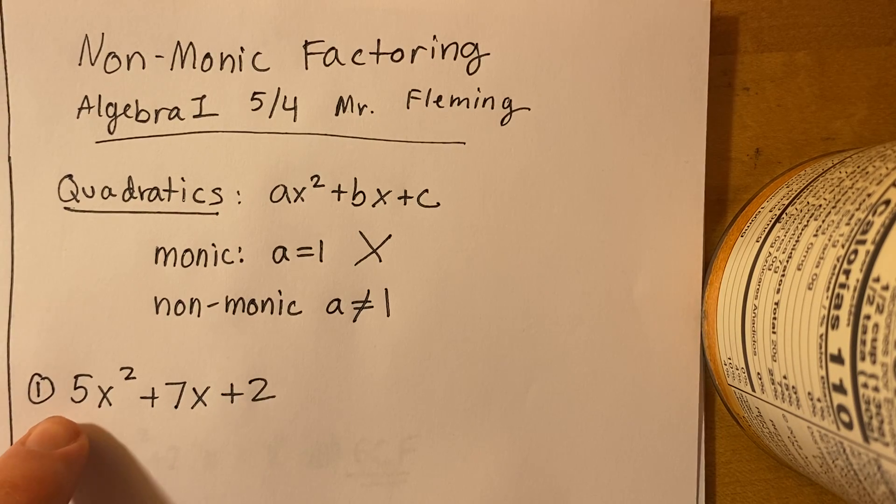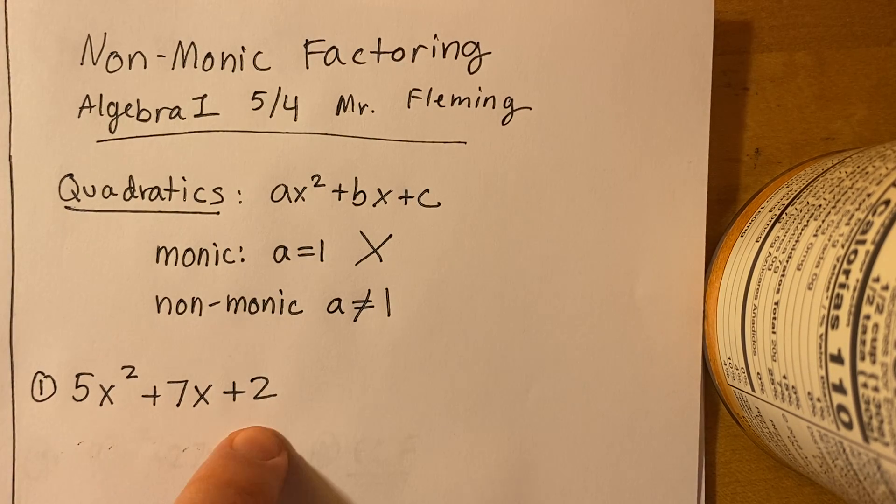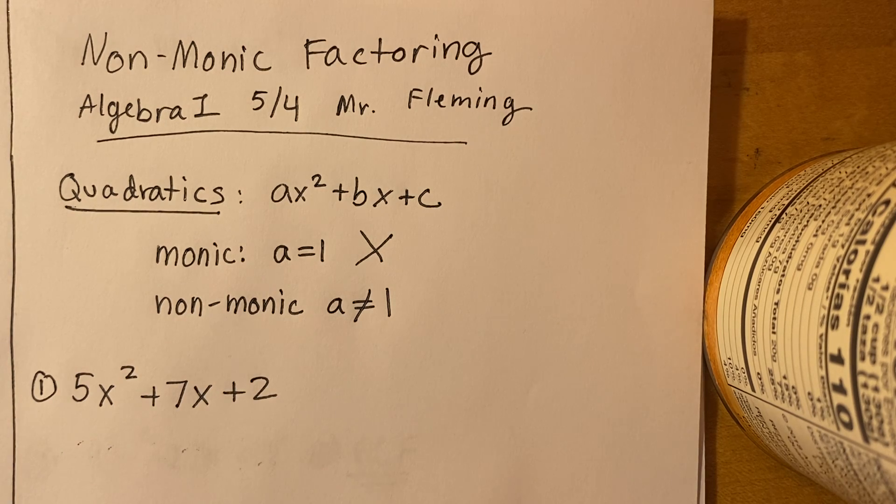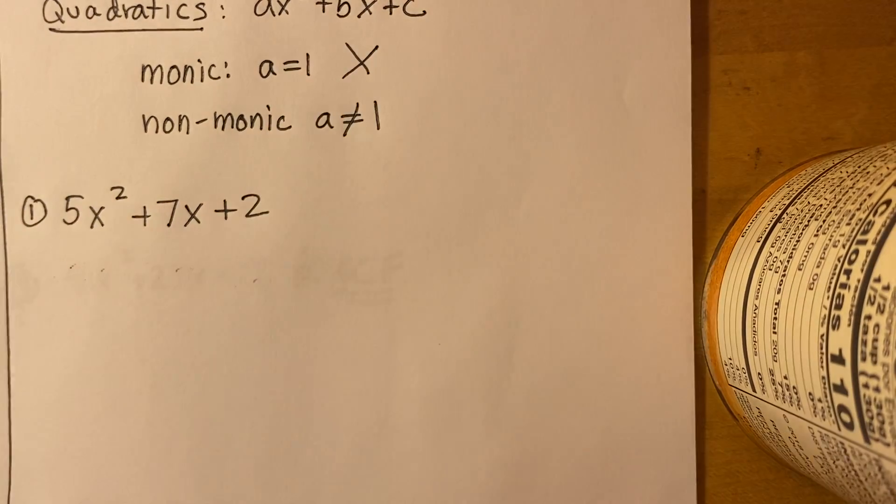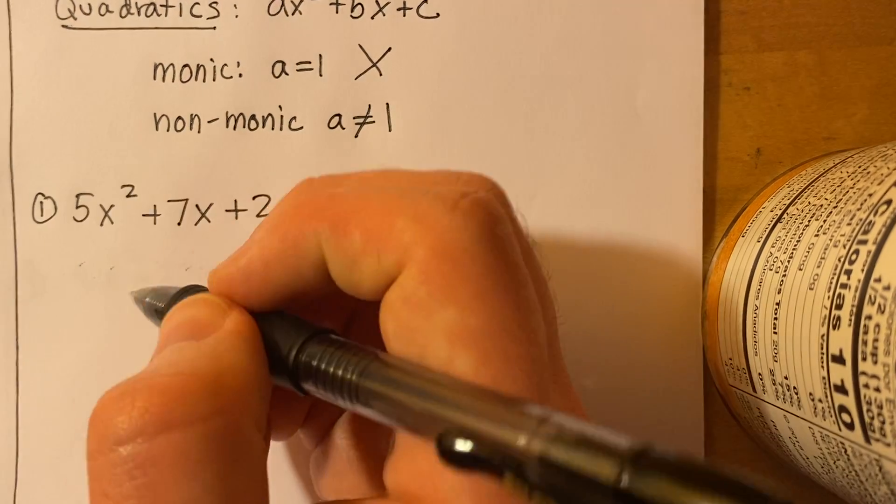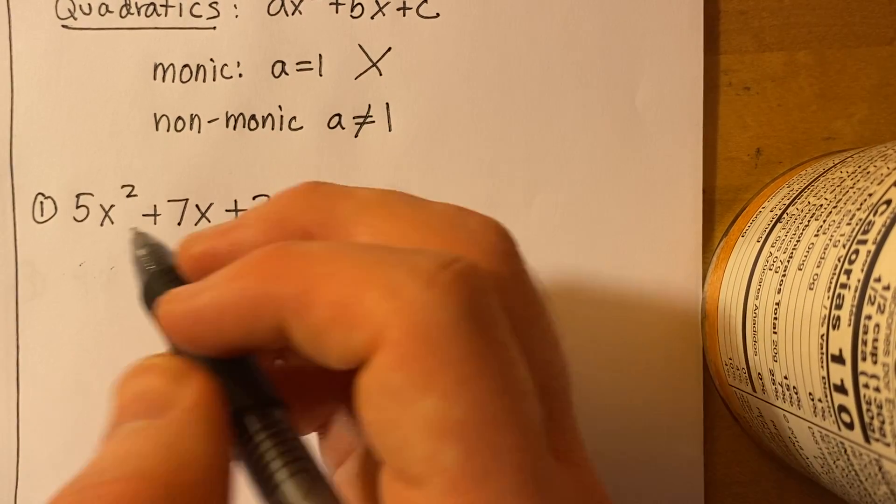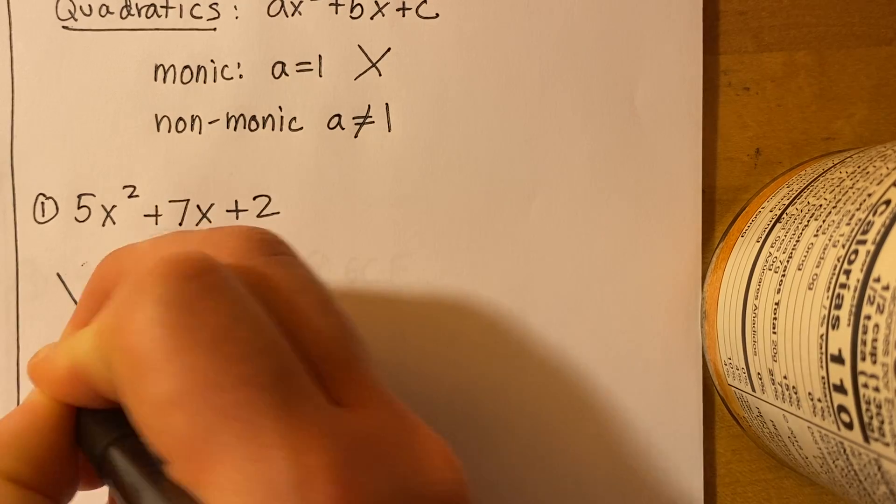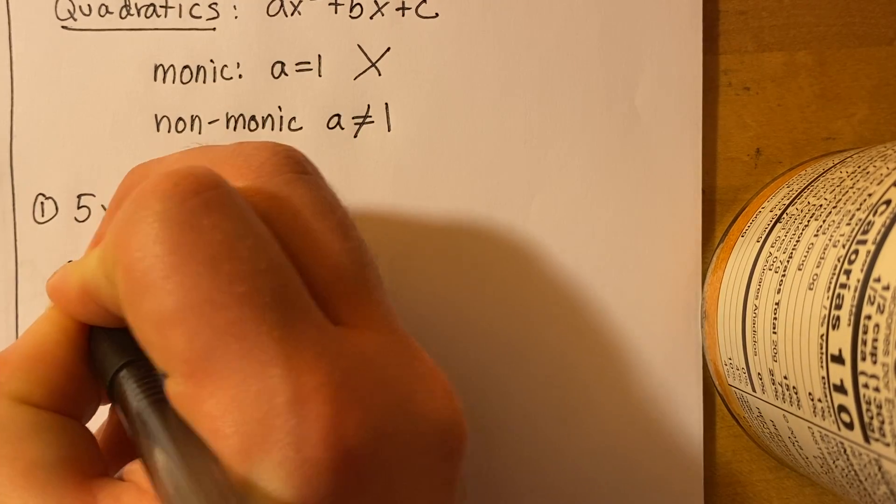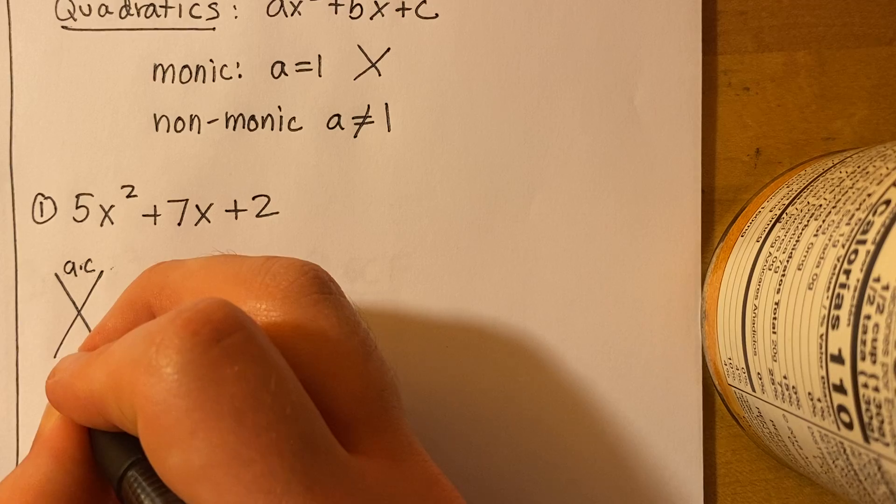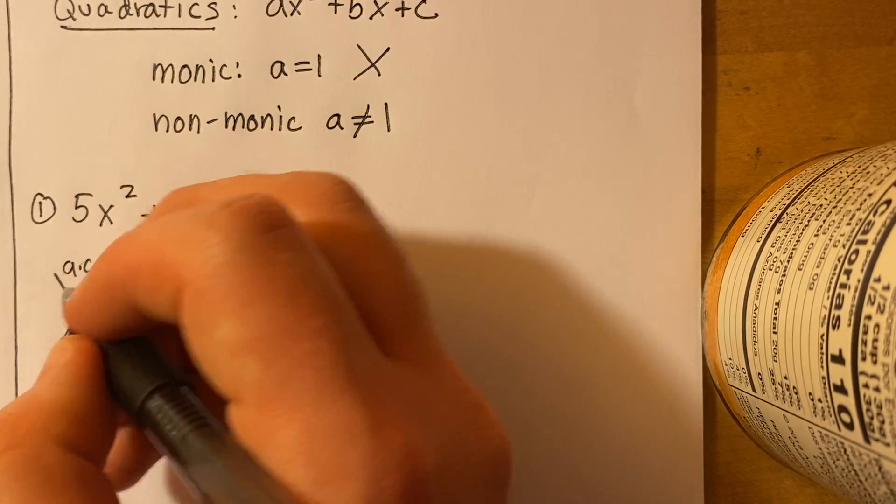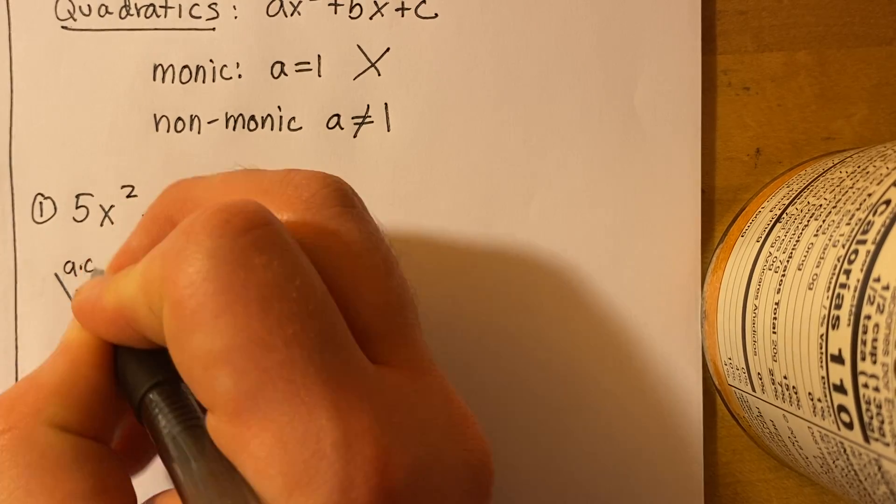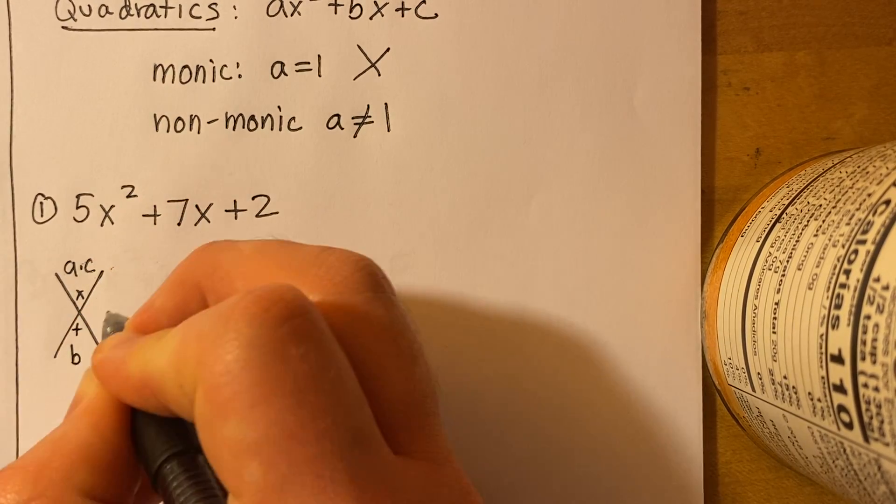Just like in our first example, 5x² + 7x + 2. You might be thinking, I can't do it like I normally do it, but there's a way to do it. So we're still going to use the X, but in a slightly different way. We're going to do a times c at the top, and then b stays at the bottom. Remember that the two numbers on the side have to multiply together to equal this number and add up to equal this number.